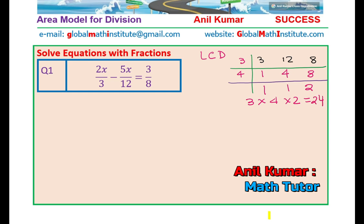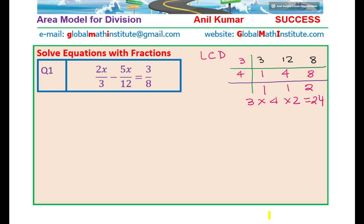Many times it is simpler to see the lowest common denominator, visualize, and write it down directly. Some of you could have directly written LCD as 24. But the ladder division method is a good approach for harder numbers. Now let us solve the question: 2x over 3 minus 5x over 12 equals to 3 over 8.